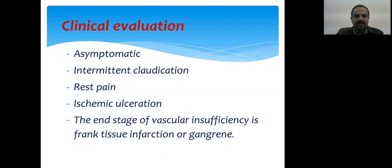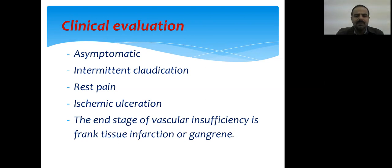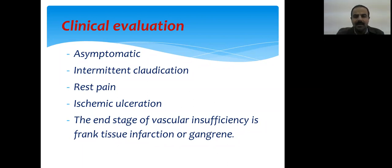When the patient walks a certain distance, blood flow decreases, oxygen delivery drops, muscles shift to anaerobic metabolism, and hydrogen ions and CO2 accumulate in the muscle area, causing irritation of sensory nerve endings. This is the cause of intermittent claudication.